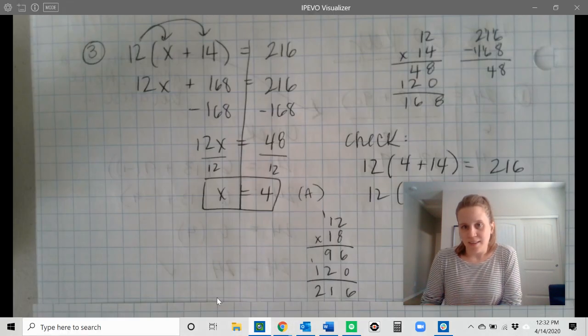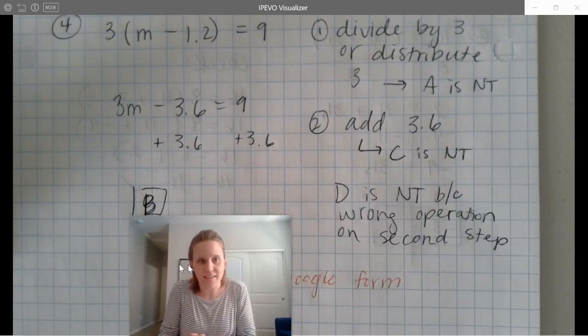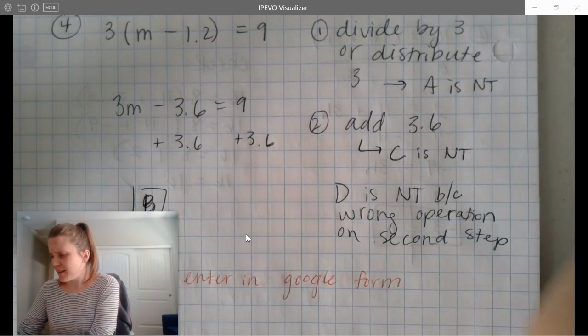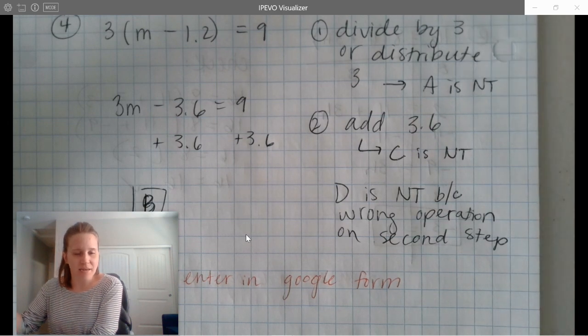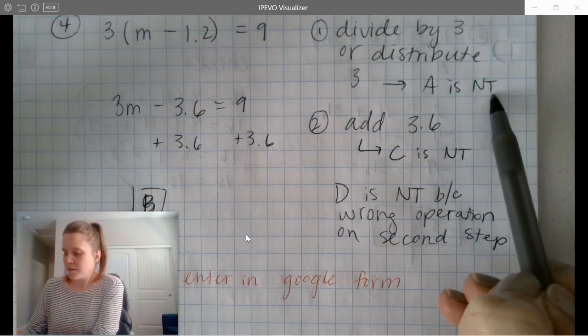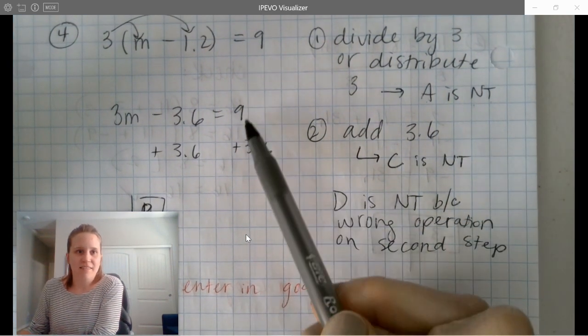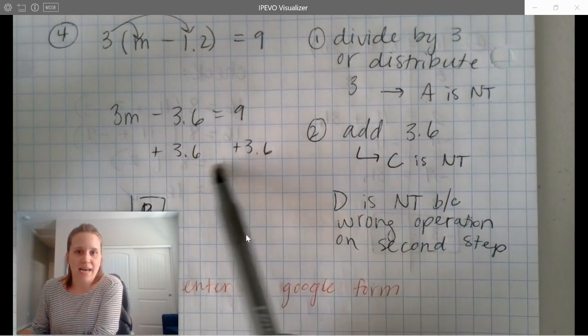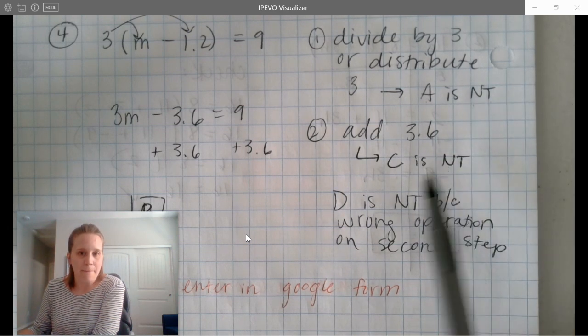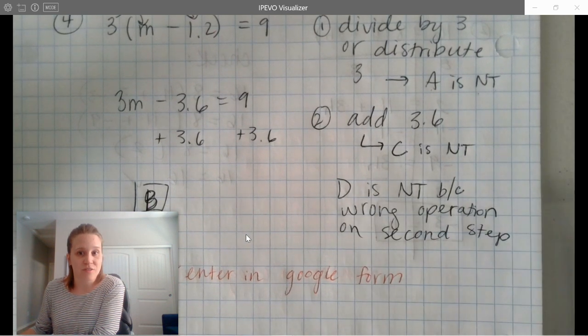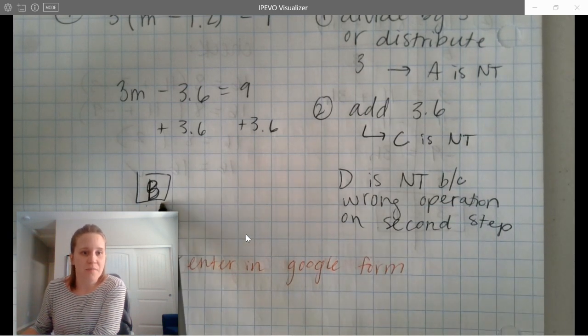All right. My thinking is here. I got the answer choice B. My thinking is, here's what I thought. I thought if I were solving this equation first, I would divide by three or distribute three. When I did that thinking, I realized that A must be not true because A said distribute to M, but not to the 1.2. So A was not true. Then I thought, if I distribute it, my next step would be to add three and six tenths to each side. That's not what C said. So I knew that C was not true. So far, I've eliminated A and C. I then was looking at B and D. I saw that D was not true because it had the wrong operation on the second step. It said subtract, it should have said add. So D was not true. I think B is the correct answer.